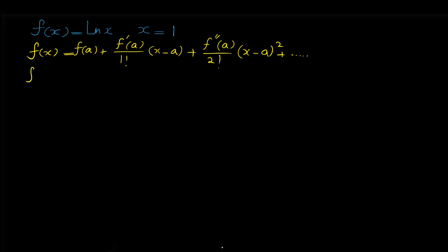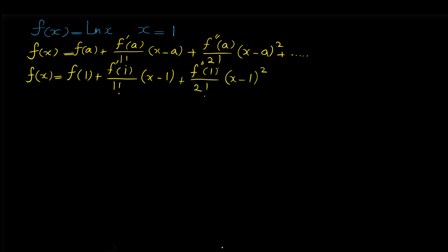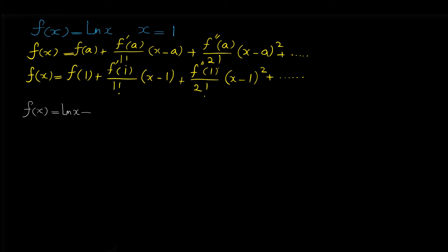So for finding the Taylor series of this function we have to find f of 1, f prime of 1, f double prime of 1, f triple prime of 1, and so on. f of x is ln of x, so f of 1 is ln of 1, and ln of 1 is 0. The derivative of ln of x is 1 over x, so f prime of 1 is 1 over 1, which equals 1.